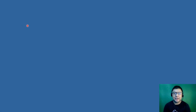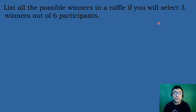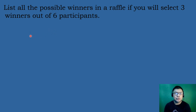For our last example: list all the possible winners in Arapol if you will select 3 winners out of 6 participants. In this case, there is no 1st place, 2nd place, or 3rd place — we just need to select 3 winners out of 6 participants. Therefore, this is an example of combination, since the order does not matter. Let's list the possible winners.